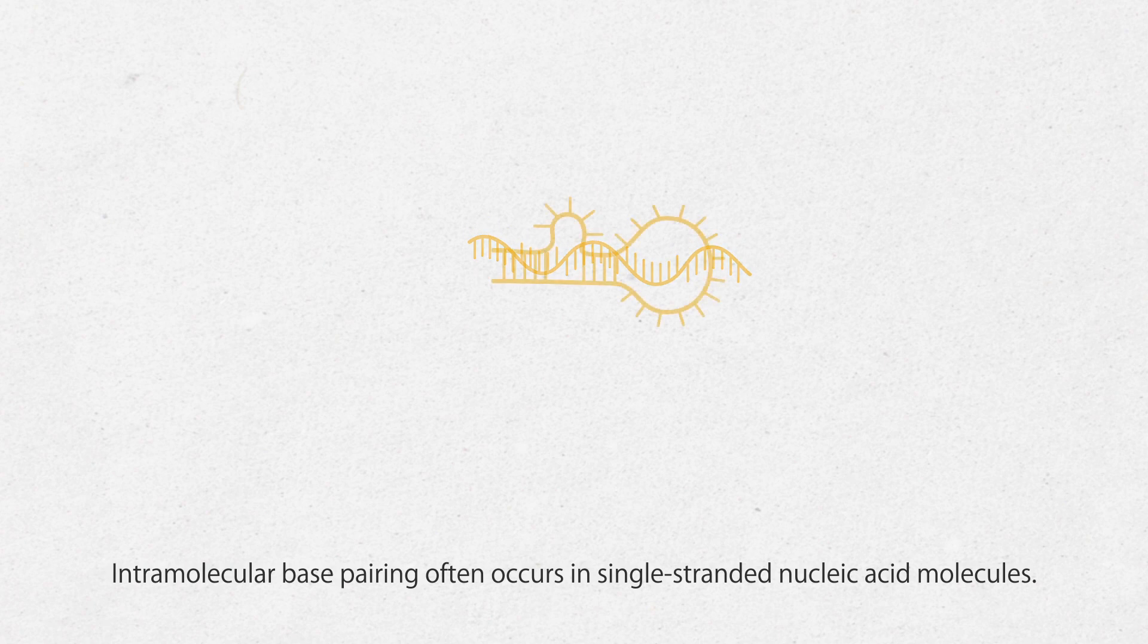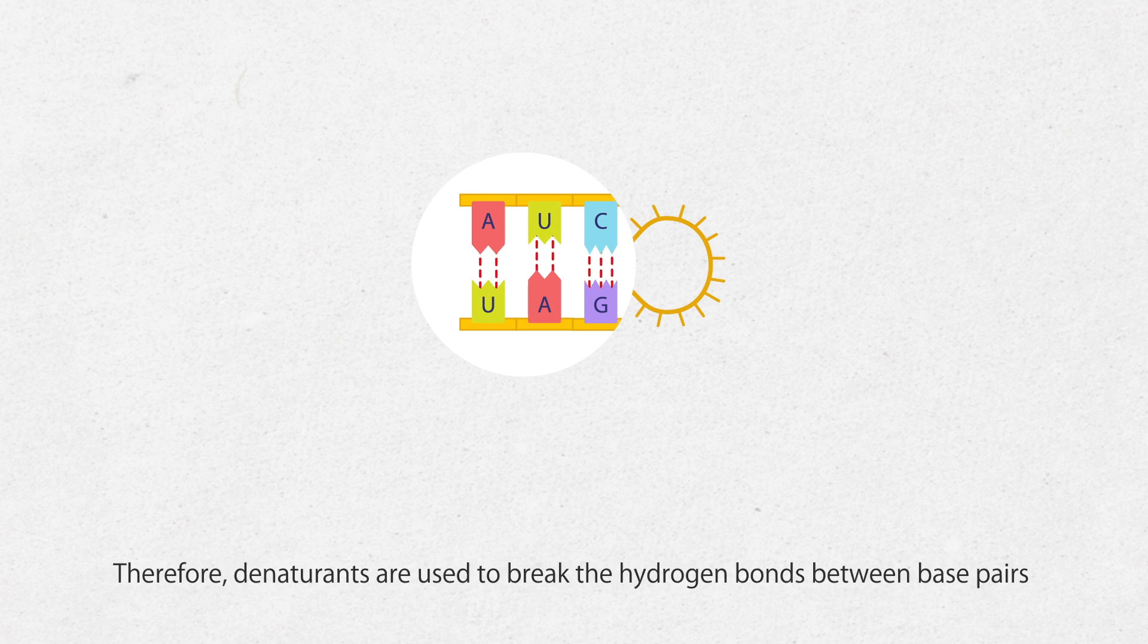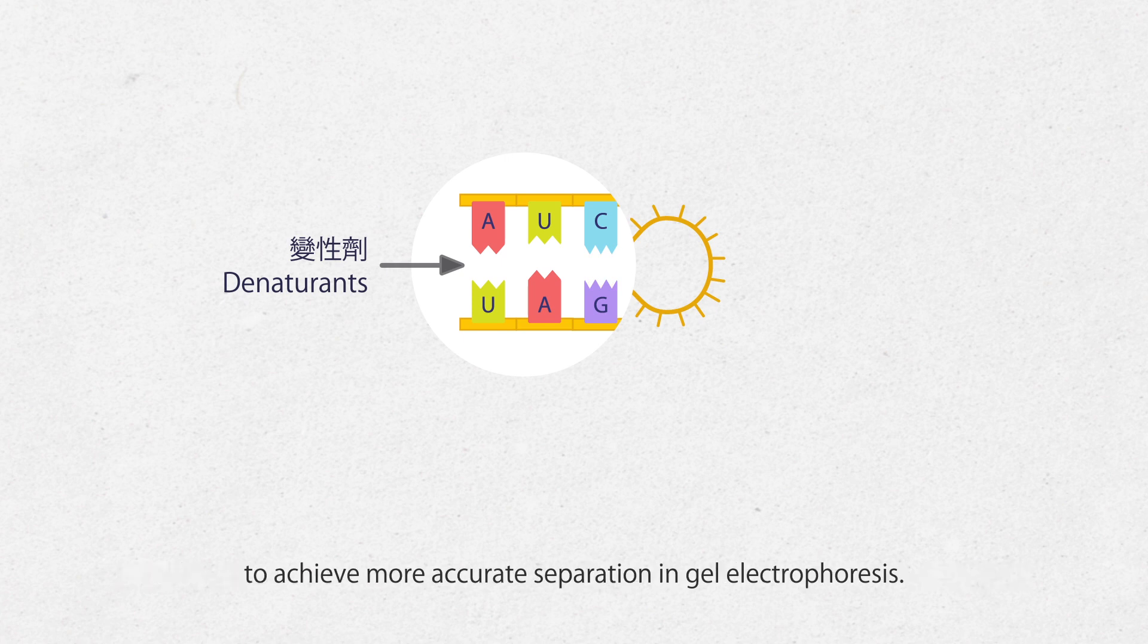Intramolecular base pairing often occurs in single-stranded nucleic acid molecules. Therefore, denaturants are used to break the hydrogen bonds between base pairs to achieve more accurate separation in gel electrophoresis.